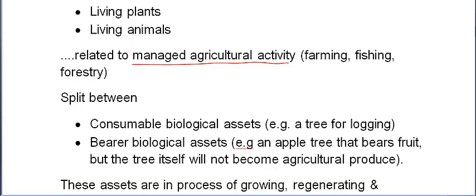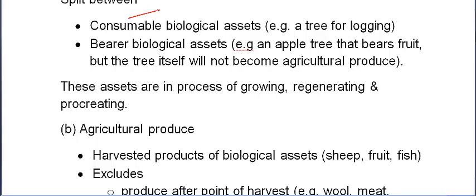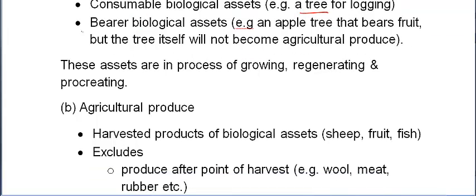We're going to split these between two categories. First, we've got consumable biological assets, where we effectively sell the final product — for example, a tree that we're going to sell for logging purposes. Then there are bearer biological assets, where the asset is the intermediary — a means of generating our final assets, such as a vine from which you get grapes, or an apple tree from which you get fruit.